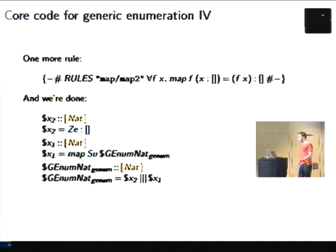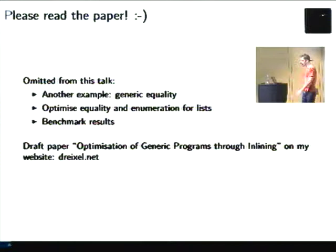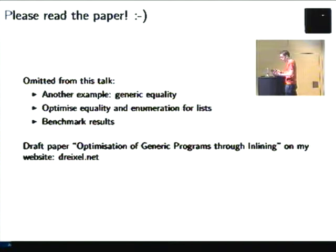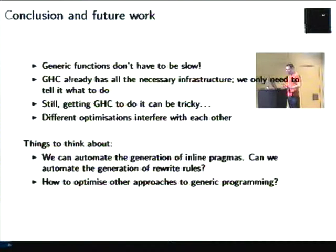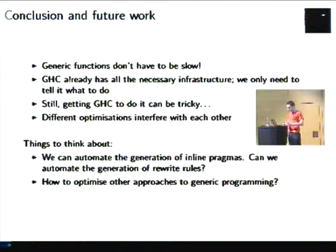So that's good — it all works, and I've shown you why it works. I have a draft paper on my website that also shows you cases where it doesn't work, but there's nothing fundamentally wrong — it's due to bugs or infelicities in the inliner that I'm looking into fixing. The conclusion is: it can work, it can be made to work, and GHC already has all the necessary infrastructure, so we just need to convince it. Unfortunately, I only know how to do this for things like generic deriving and instant generics — not for SYB, for instance. Thank you.